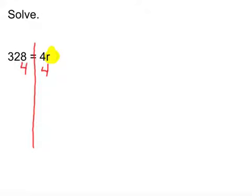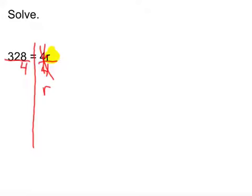Remember, since there's not an operation written here, it's understood that 4R means 4 times R. The opposite or inverse of multiplication is division, so we're going to put a division bar on both sides. I want to see the division written as a fraction bar. Now we have 4 divided by 4, which is 1, and I'm going to bring my R straight down. Remember, 1 times R equals R, so I'm going to leave it as just R. I'll bring down my equal sign.